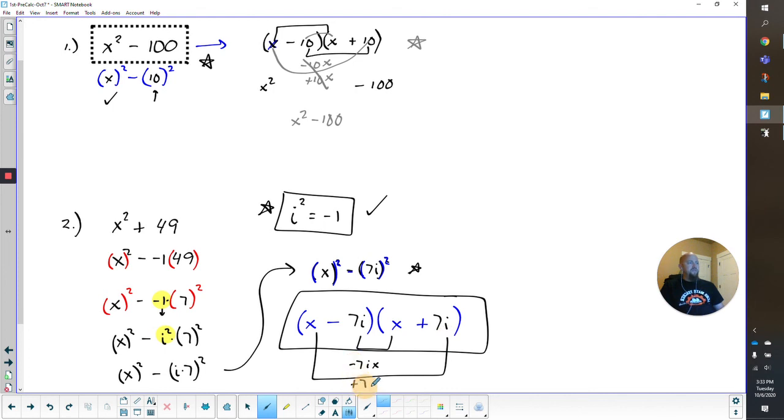So those middle terms are going to cancel. And of course, we know we're going to get our X squared and we're going to get our negative 49 I squared, which will bring us back to positive 49.